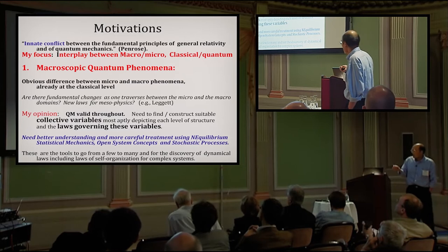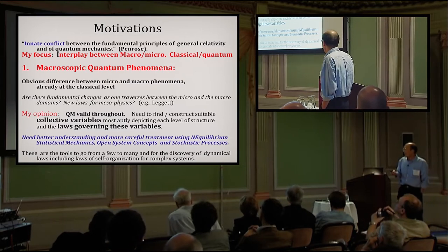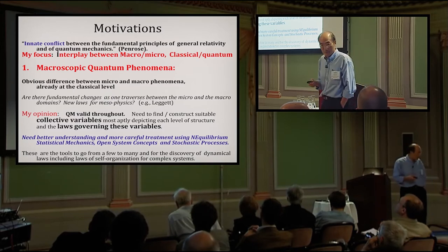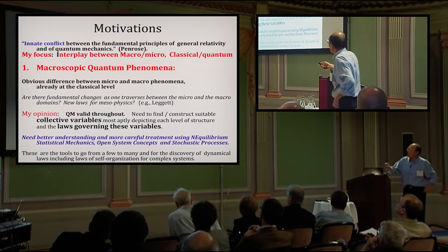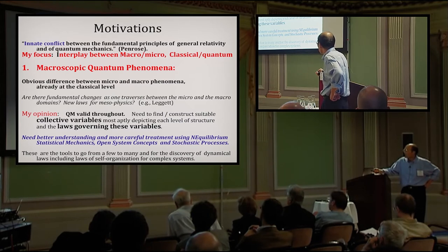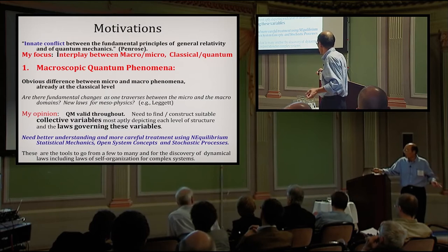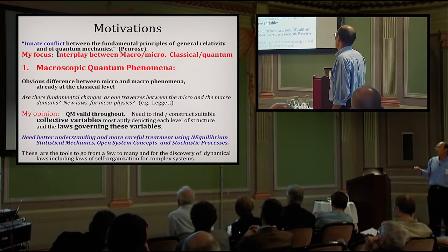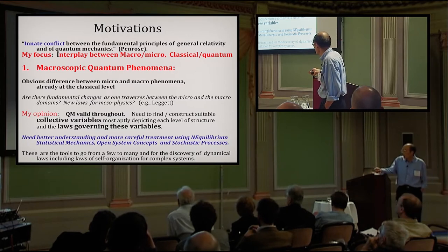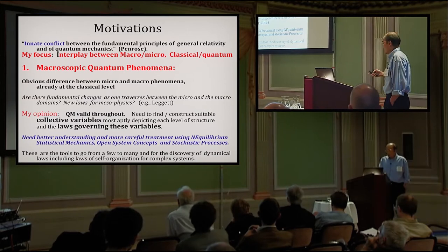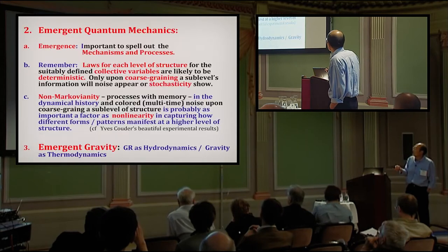These are collective variables most aptly depicting each level of structure and the laws governing these variables. And amongst these, that's probably where the emerging phenomena would become more apparent, as was shown in the first part of Yan's talk very forcefully. Non-linear dynamics, self-organization, et cetera. So I think we need a better understanding, and in fact we need a more careful treatment, using non-equilibrium statistical mechanics, open system concepts, and stochastic process.